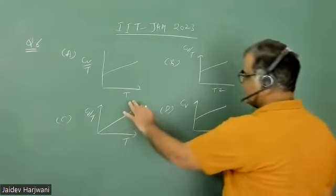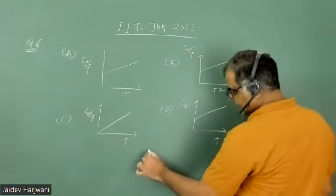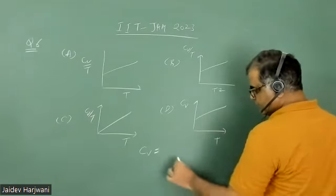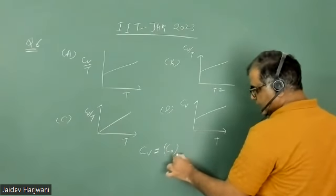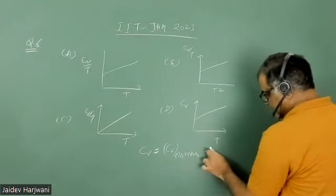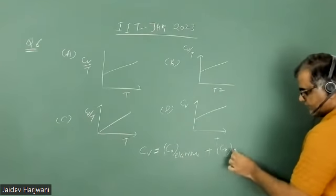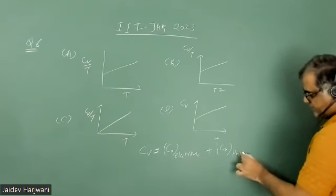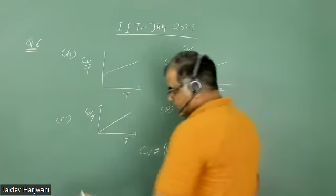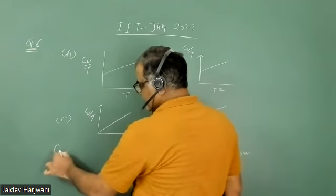For a two-dimensional metallic solid, we know the specific heat of metal has two contributions. One is CV due to electronic contribution, and the other contribution comes from phonon or lattice vibration.